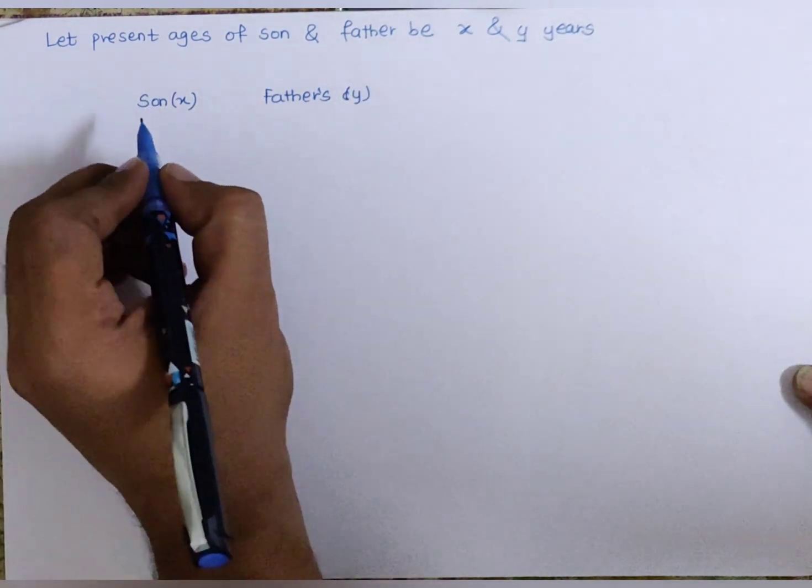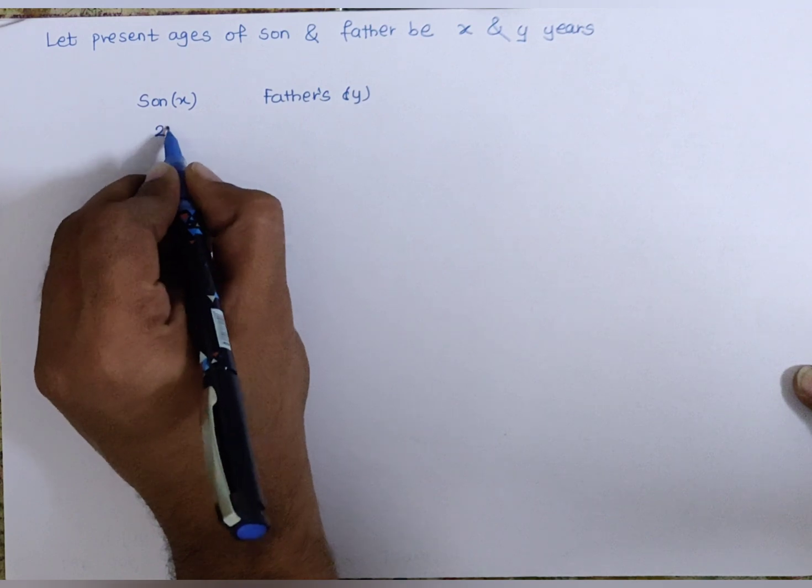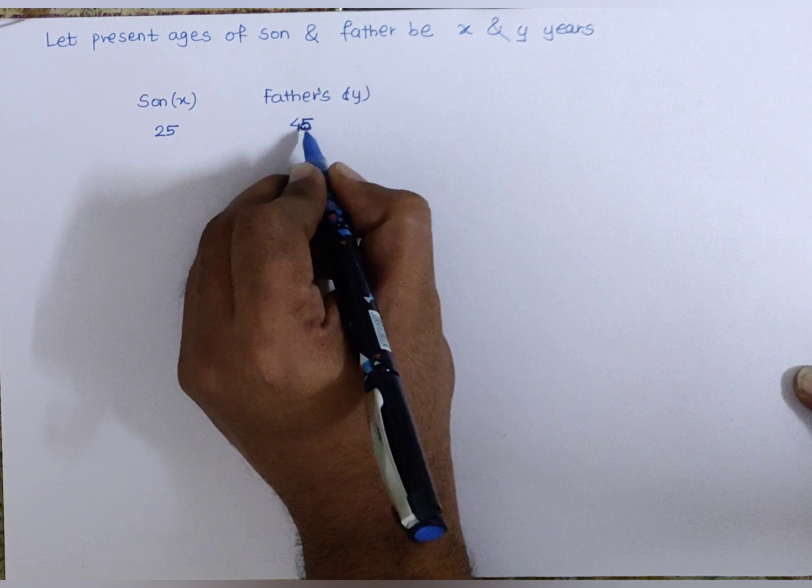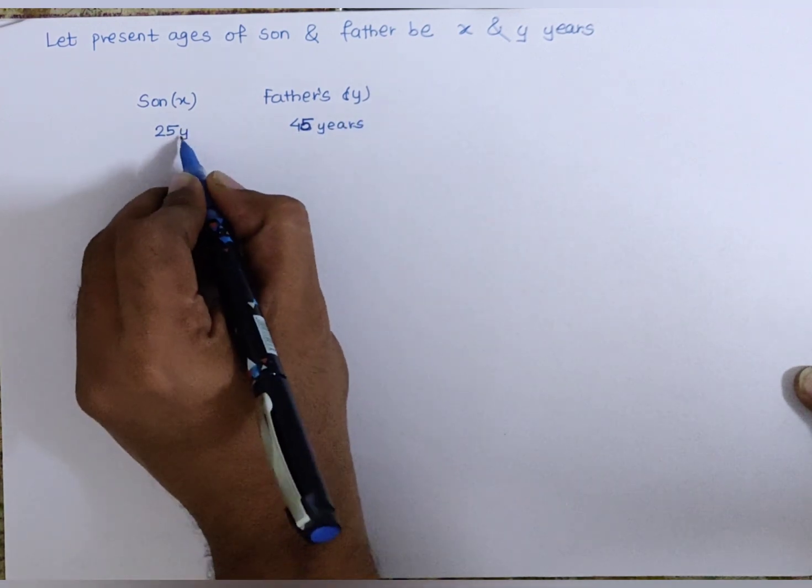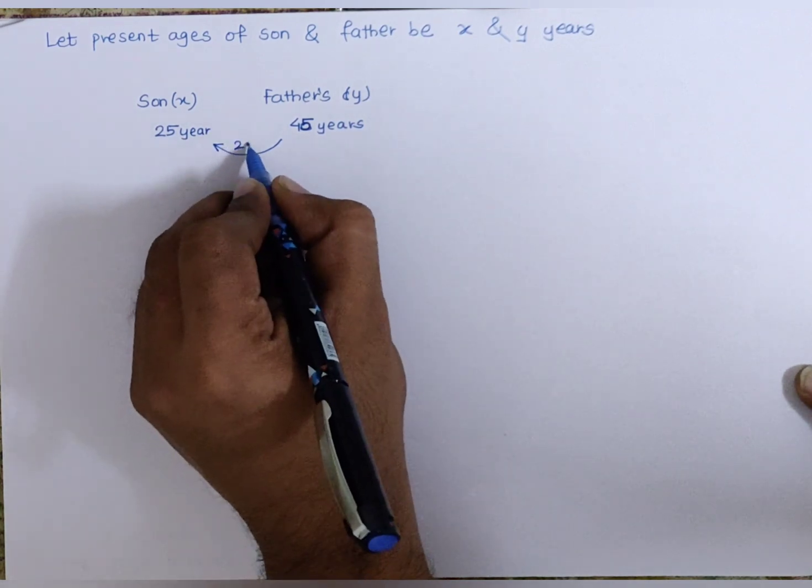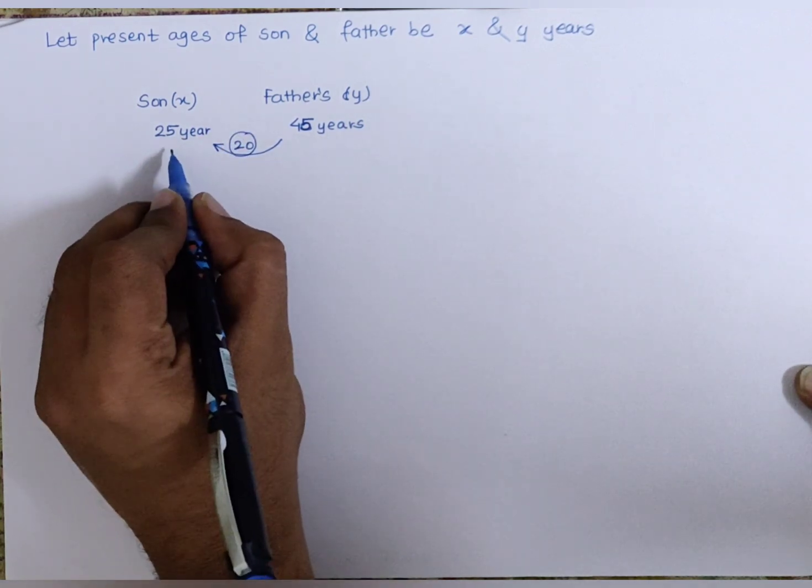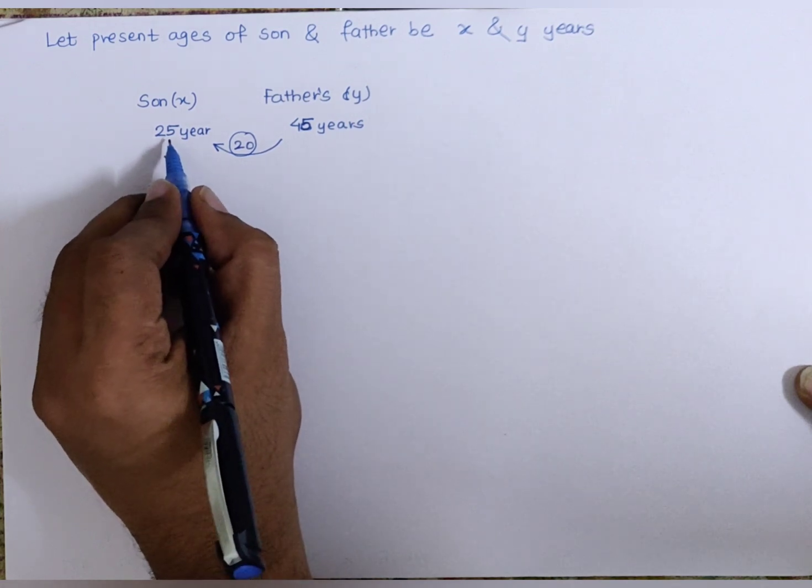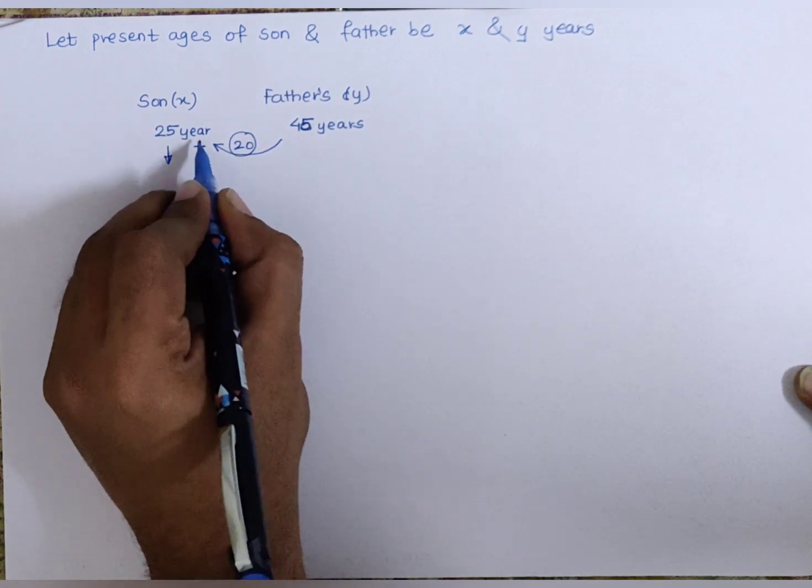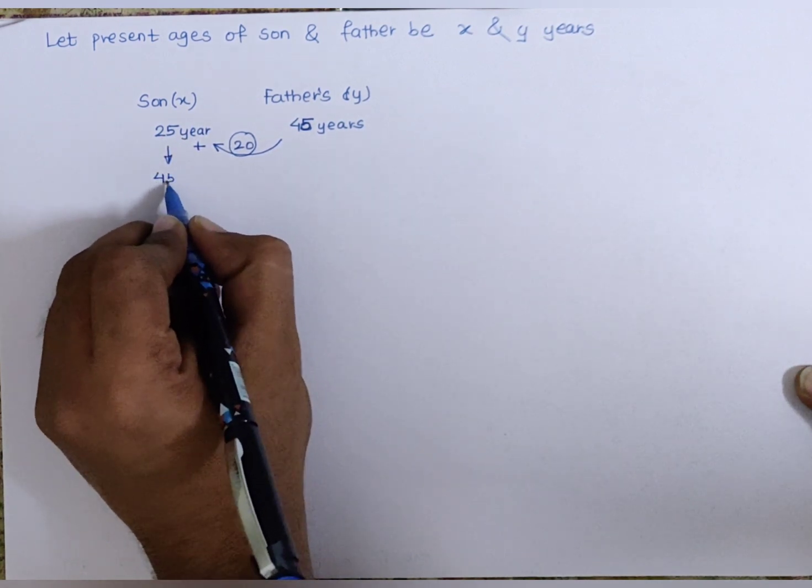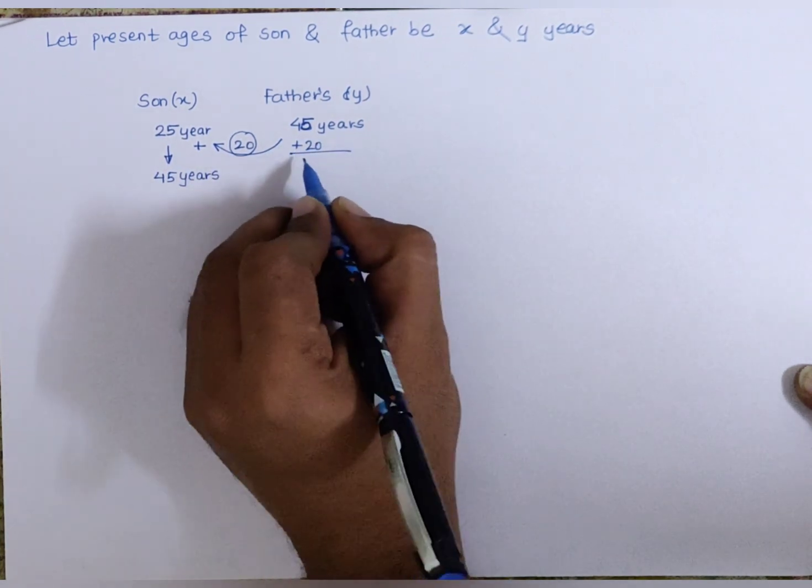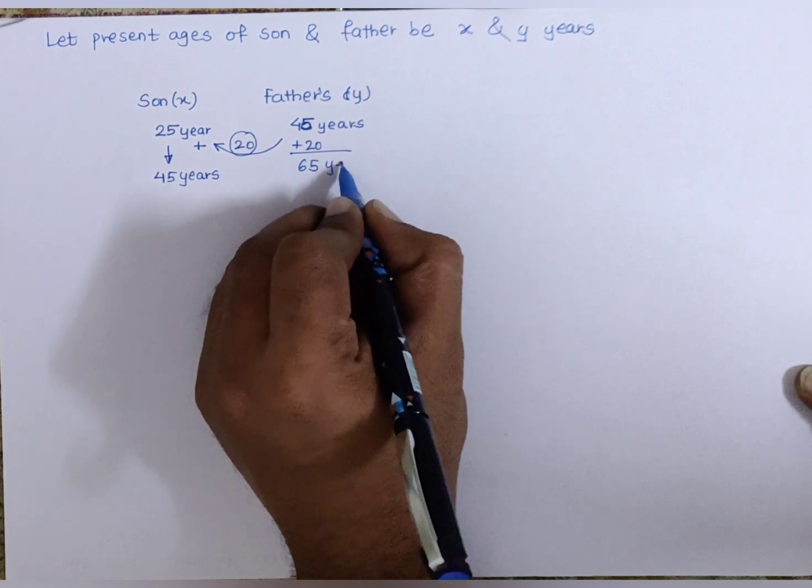I will take an example - let the son's age be around 25 years and the father's age be 45 years. The difference in their ages is 20 years. According to the first condition, for the son to be as old as his father, he has to grow up 20 years more, making him 45 years, and his father will grow 20 years more, making him 65 years old.